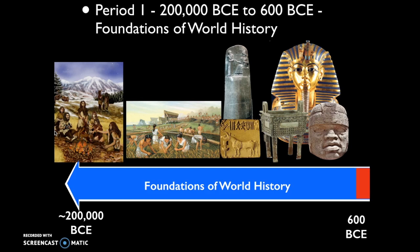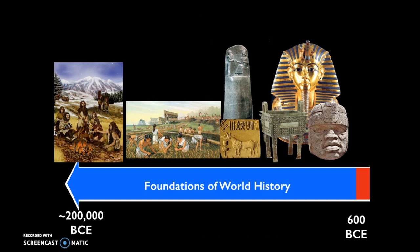This transition to farming and eventually civilization is going to occur independently in various places around the world. That represents 5% of the AP test — Period 1.